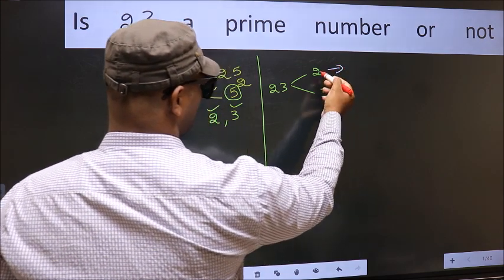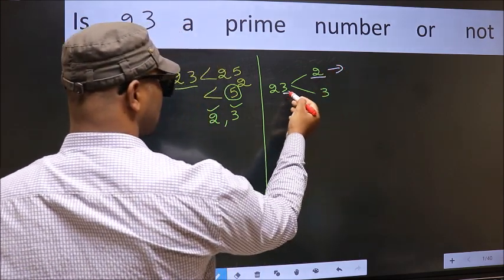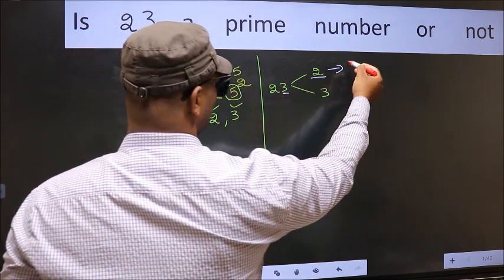Now for 2. Last digit is 3, not even. So this is not divisible by 2.